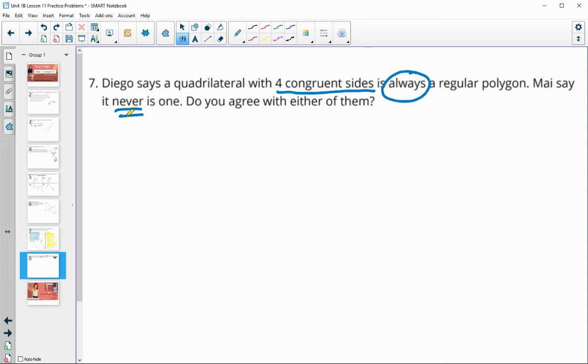So basically, if we can draw any that are regular, then Mai would be wrong. And if we can draw any that don't have equal angles, then Diego would be wrong. Four equal sides is considered a rhombus. Here's a rhombus that does not have equal angles. So it doesn't always have to be a regular polygon.